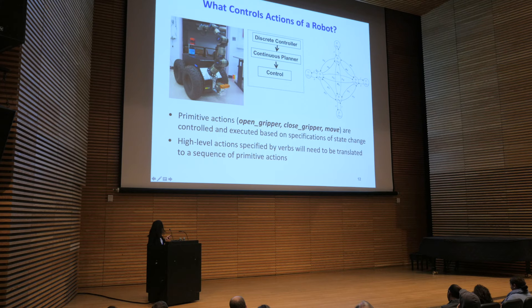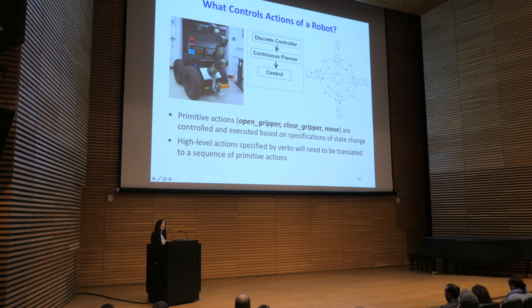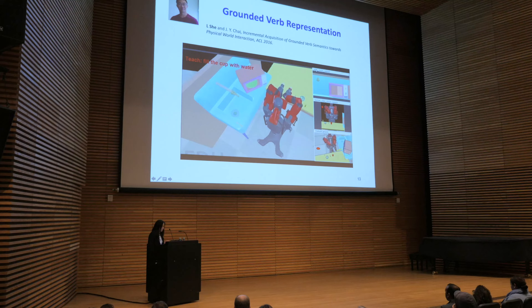For example, this industrial robotic arm only knows three primitive actions: open gripper, close gripper, and move-to. So if you want the robot to put the apple on the plate, it has to translate these actions into a sequence of primitive actions. The heart of the problem is planning. The question is: how do we link the verb representation with the underlying planning system? My former student Chao Tzu has looked at this problem.